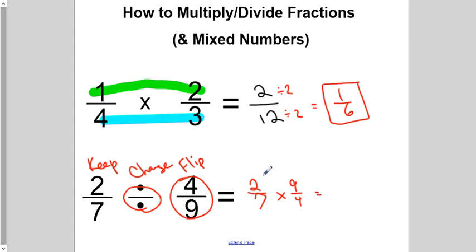Now, guess what we do? Straight across. 2 times 9 is 18. And 7 times 4 is 28. And then, at this point, you just divide. You know, you simplify the fraction. That's it. That's all we have to do.